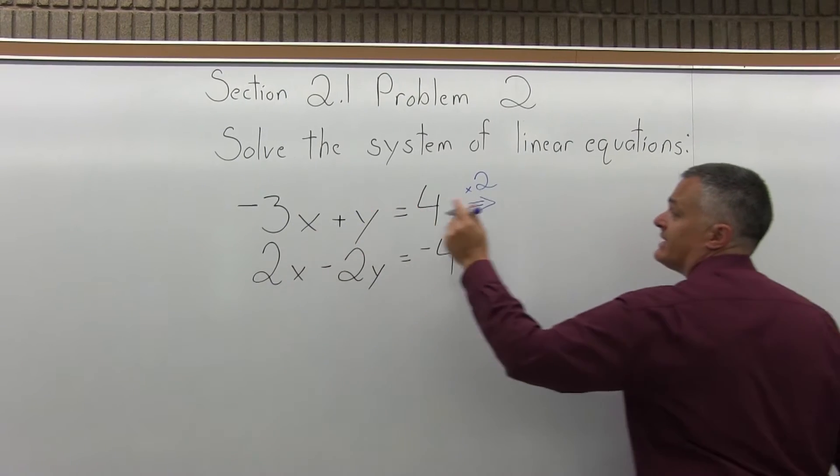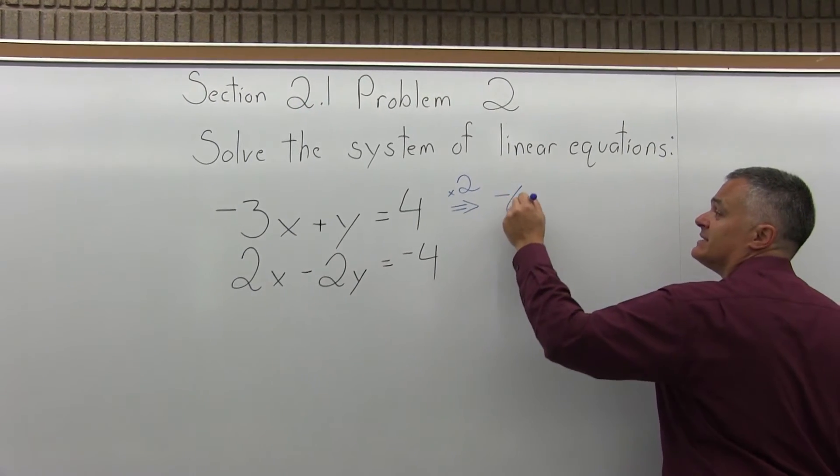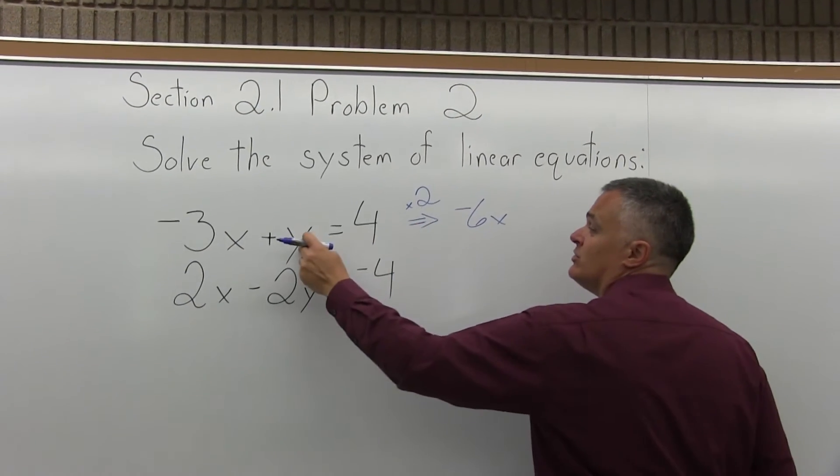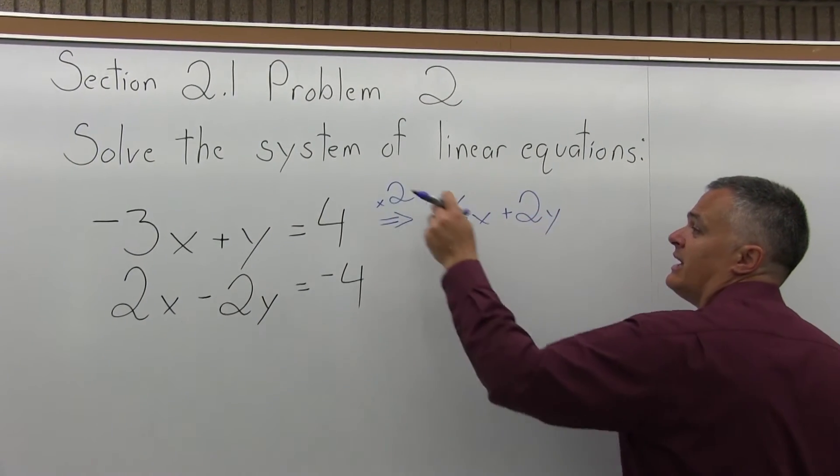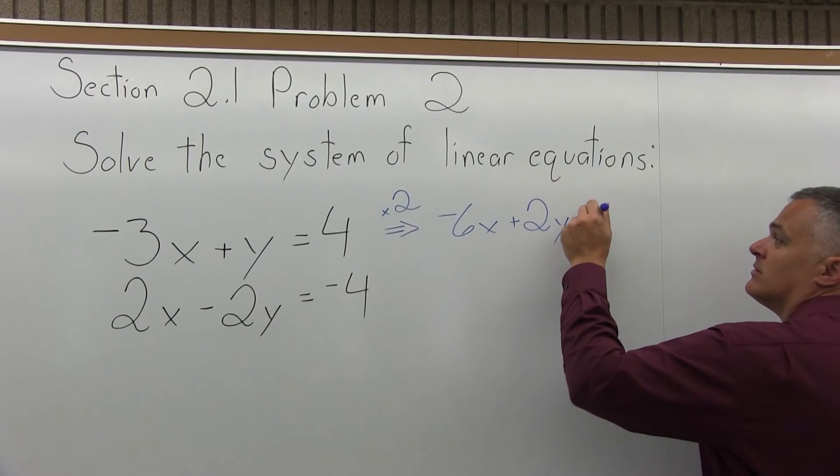So 2 times negative 3x will be negative 6x. 2 times y will be plus 2y. And then 2 times 4 will be 8.